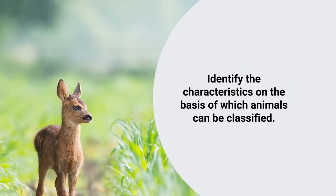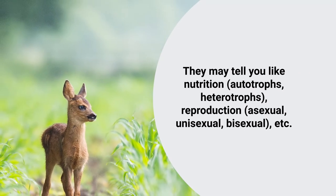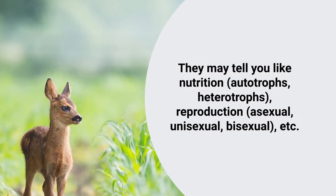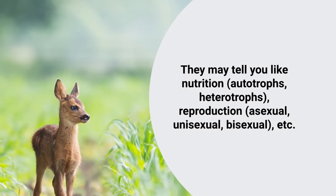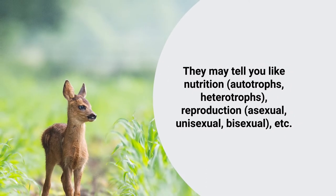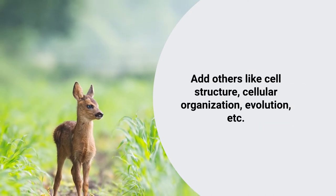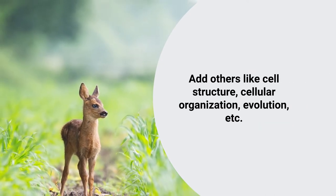Students may tell you many characteristics: on the basis of nutrition, organisms can be classified into autotrophs and heterotrophs; reproduction can be asexual, bisexual, or unisexual; there are other criteria like cell structure, cellular organization, and evolution. When students are discussing certain criteria, also introduce one or two additional criteria into that list slowly, so they start to think on those dimensions too.